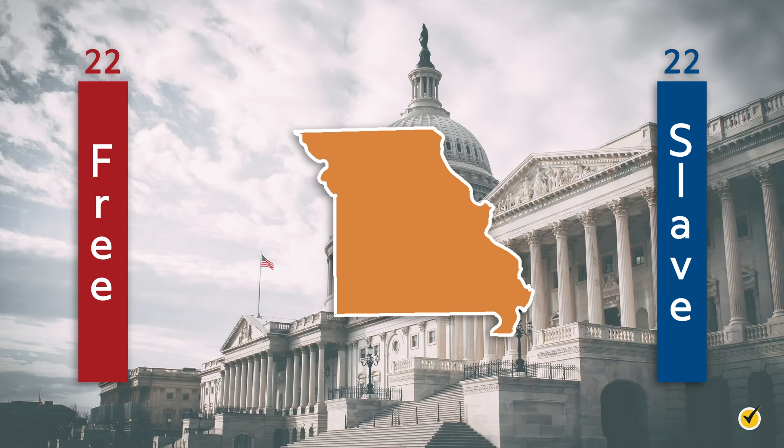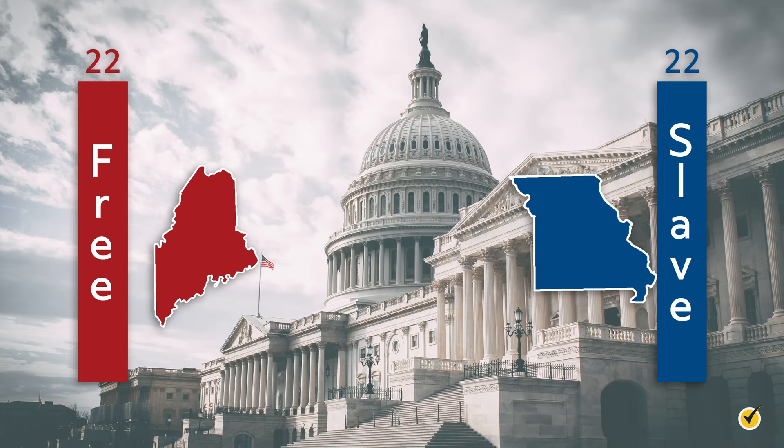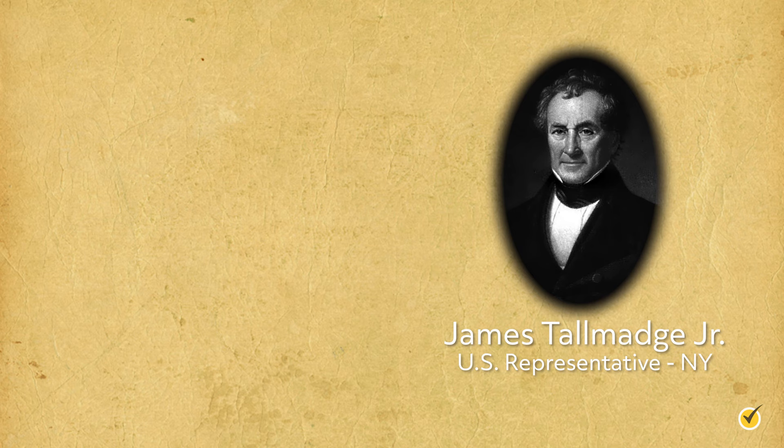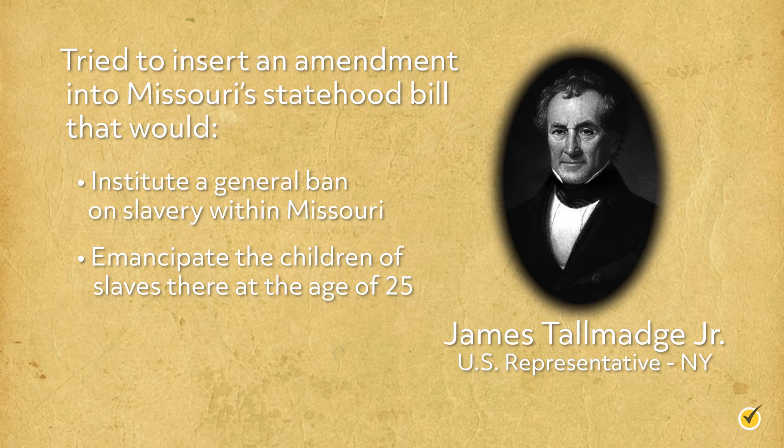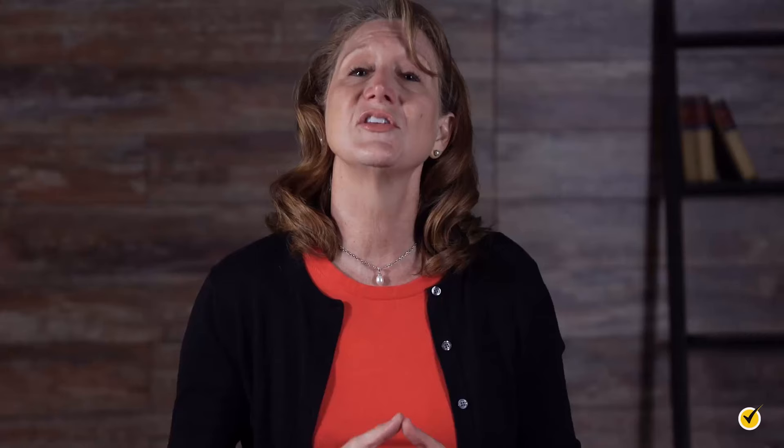Shortly after Missouri lodged its application, Maine also applied for statehood as a free state. Yet southern slave state senators then began a campaign to prevent Maine's admission, and tension escalated quickly. From the anti-slavery side too, politicians were making moves, among them New York Congressman James Talmadge Jr., who tried to insert an amendment into Missouri's statehood bill that would institute a general ban on slavery within Missouri and emancipate the children of slaves there at age 25. A speech Talmadge gave in February 1819 in defense of his amendment received international attention, even being translated into German. But although it passed the House, the Senate rejected it, additionally voting to allow slavery unhindered in Missouri.